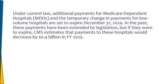Under current law, additional payments for Medicaid dependent hospitals and the temporary change in payments for low-volume hospitals are set to expire December 31st, 2024. In the past, these payments have been extended by legislation, but if they were to expire, CMS estimates that payments to these hospitals would decrease by 0.4 billion dollars in fiscal year 2025.